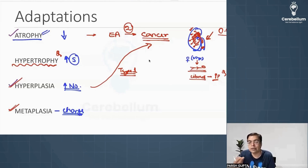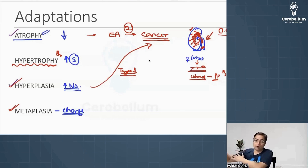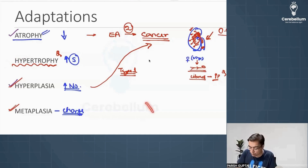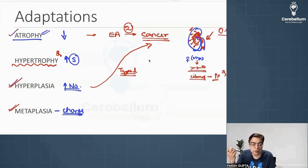A recent exam one-liner question was about a guy who goes to a gym and has very well-developed biceps and triceps — that is an example of skeletal muscle hypertrophy. Another example is a patient who has the presence of valvular stenosis, say aortic stenosis — that patient could be having the presence of left ventricular hypertrophy.